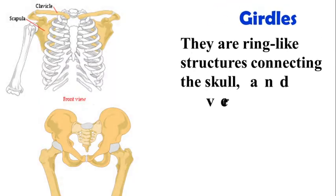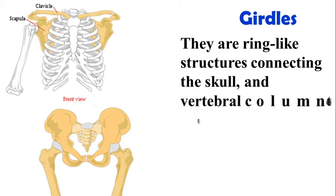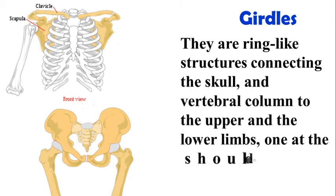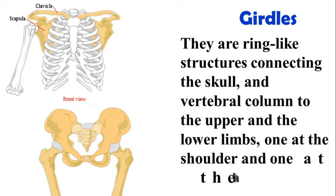Girdles: They are ring-like structures connecting the skull and vertebral column to the upper and the lower limbs, one at the shoulder and one at the hip.